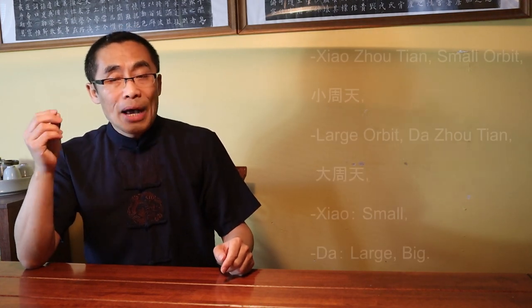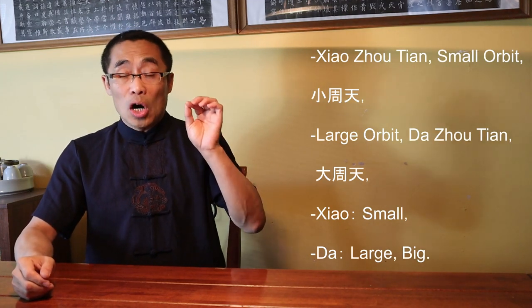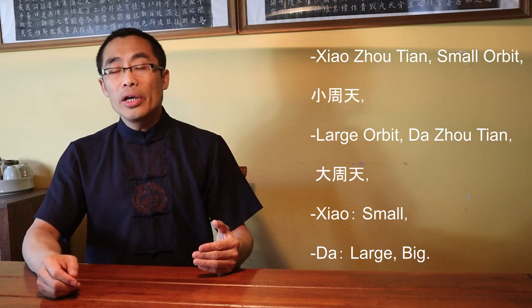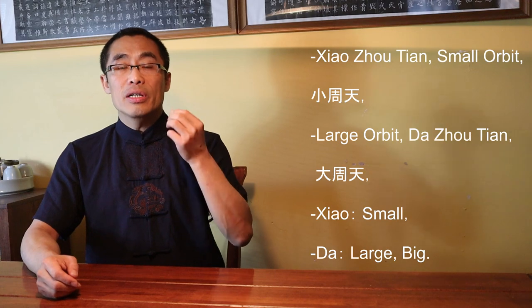I plan to introduce some of these documents in the future. In English, some people use the term Orbit to describe Zhou Tian — I think it is a good translation, so I will use both Zhou Tian and Orbit interchangeably in this video. In Xiu Dao, Orbit or Zhou Tian is the practice of circulating the energy in the meridian or other channels. Basically, there are two types of Zhou Tian in Xiu Dao: one is the Xiao Zhou Tian or the small orbit, and the other is the large orbit or Da Zhou Tian. Xiao means small and Da means large or big.